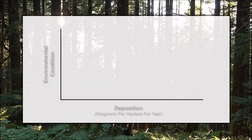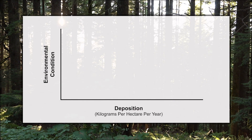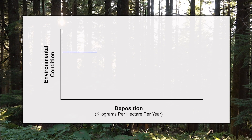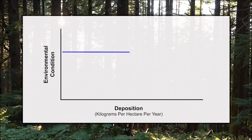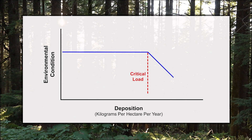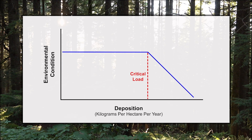As mentioned in the introductory video, a critical load is the level of deposition at which an ecosystem begins to experience harm. When a critical load is reached or exceeded, ecosystem damage is expected to begin.